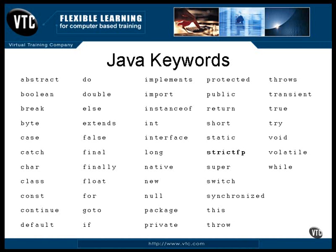strictfp is short for strict floating point. You can use it as a modifier on a single method or on an entire class. It has to do with the floating point code that's generated by the compiler. Without this declaration, the floating point code is more relaxed about certain things that normally don't matter. But if you're creating a program where the floating point operations need to be scrupulously accurate, this modifier will guarantee that the code is generated to do just that.